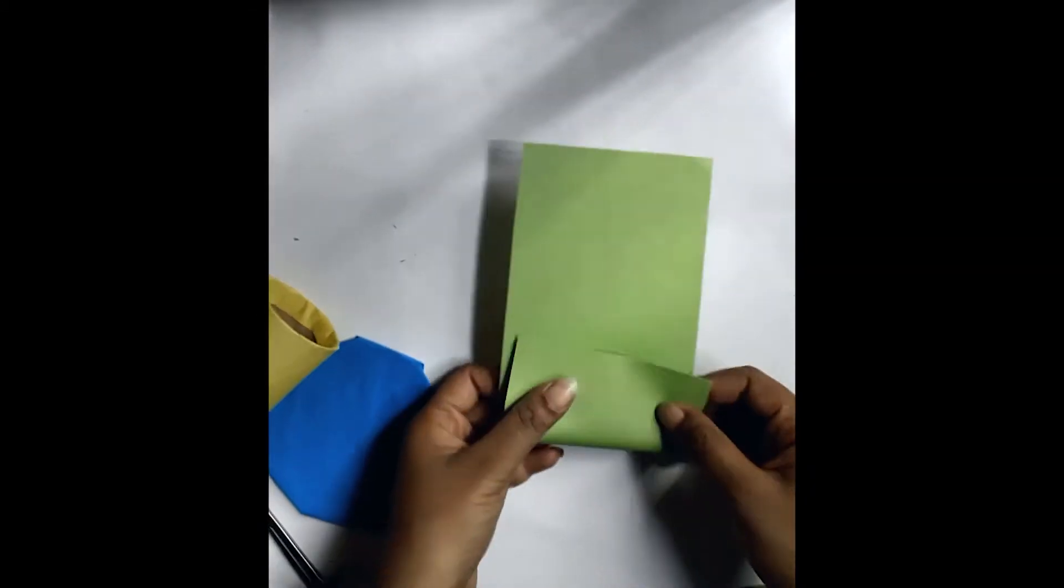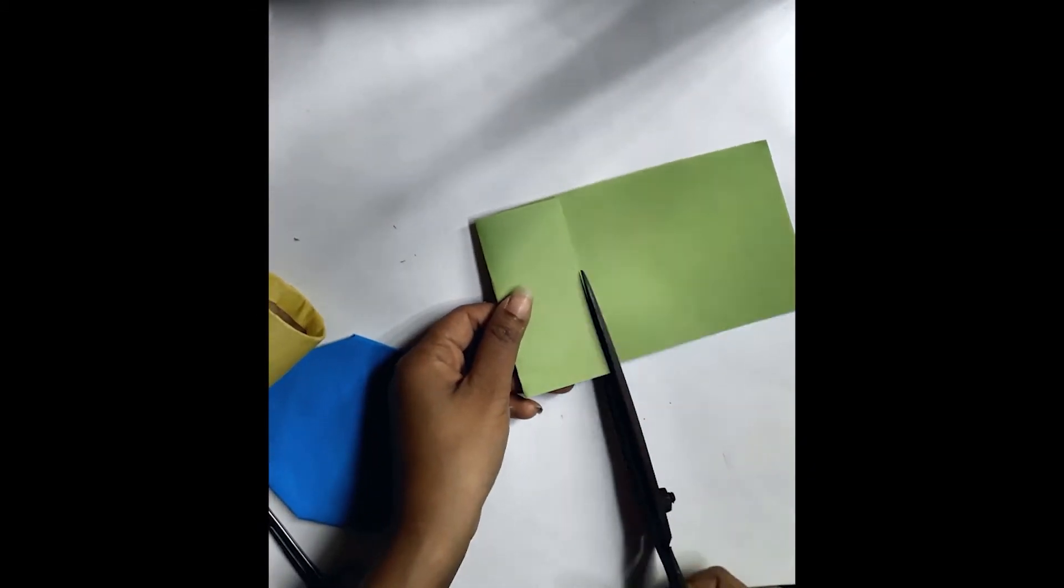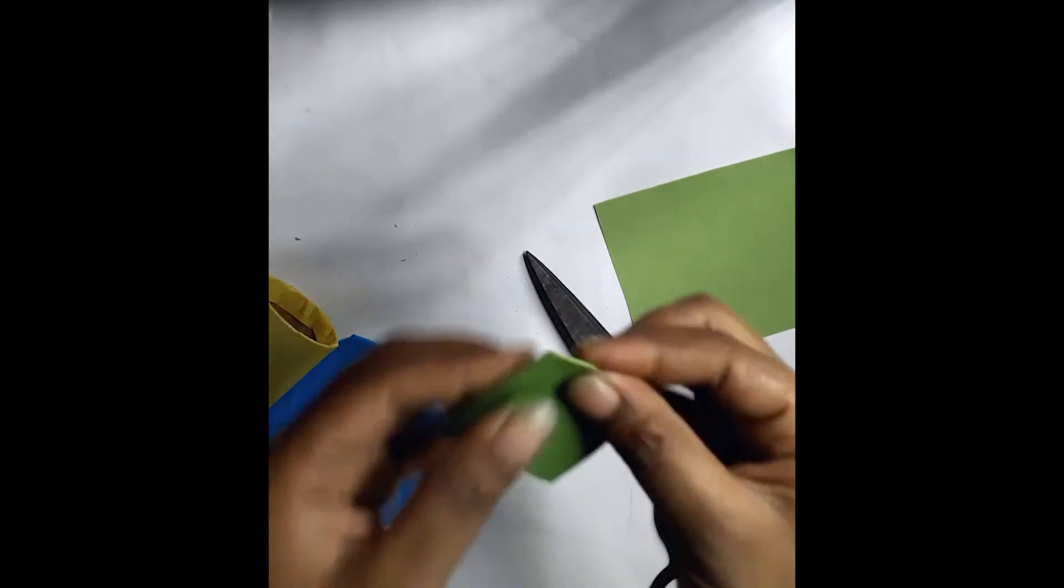Now take a new color paper. Crease it and cut the creased paper as like a trapezium which is shown in the video.